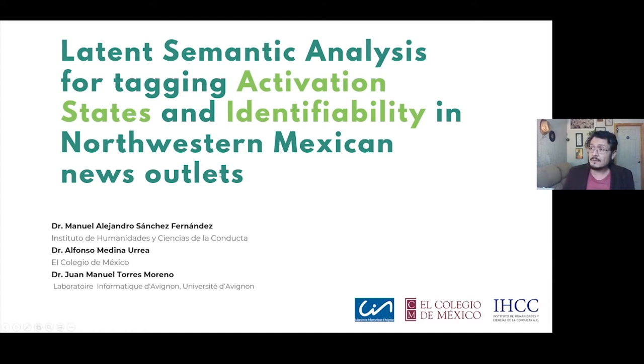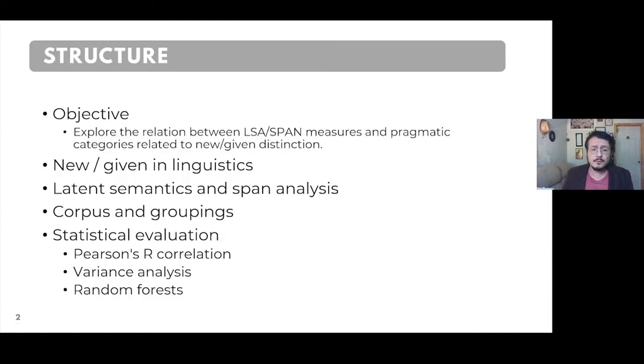The objective of this work is to present the results of experiments where Latin Semantic Analysis, LSA, and a variation called SPAN were used to automatically identify, in noun phrases, the speaker's assumptions about the ability of the listener to identify a referent or have it in their attention. This, in pragmatics, has been analyzed as cognitive identifiability and activation states, and they are part of sentence and discourse analysis.